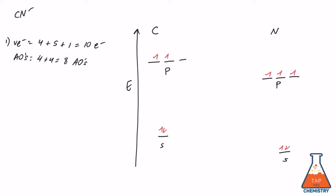But remember, we have an extra electron because of the negative charge. We put this electron on nitrogen because it's more electronegative.